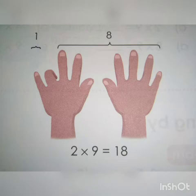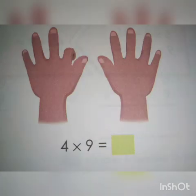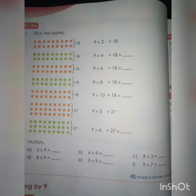Now from left side, 3rd finger was closed, so 3 times 9 equals 27. Next, if you close 4th finger from left side, then 4 times 9 equals 36.